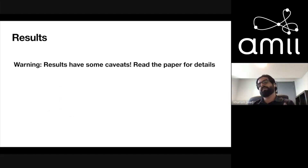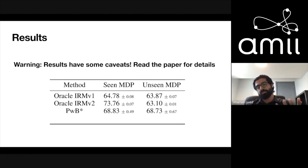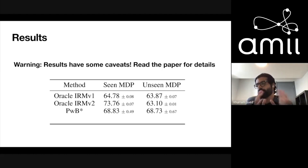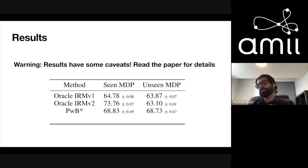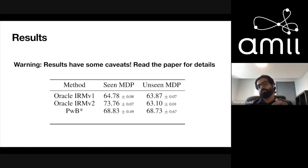Here are results on the image version of the task. Oracle IRM — shown in two parameter versions because I tried to optimize it as well as possible — works and can ignore the color information, doing well on the unseen MDP. Perturbation with backtracking does equally well and has no parameters to tune — you just run it. It will take much longer because it's a random search, but it's also online, whereas the oracle method is not.